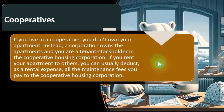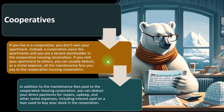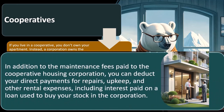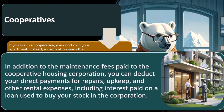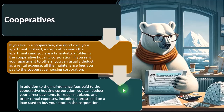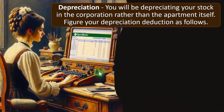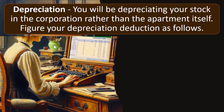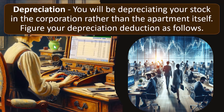If you rent your cooperative apartment to others, you can usually deduct as rental expense all the maintenance fees you pay to the cooperative housing corporation. In addition to those maintenance fees, you can deduct your direct payments for repairs, upkeep, and other rental expenses, including interest paid on a loan used to buy your stock in the corporation. However, it gets a little more complex with regards to depreciation.